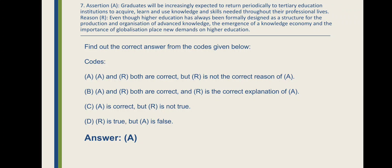Codes are given here. Option A: A and R both are correct but R is not the correct explanation of A. Option B: A and R both are correct and R is the correct explanation of A. Option C: A is correct but R is not true. Option D: R is true but A is false.